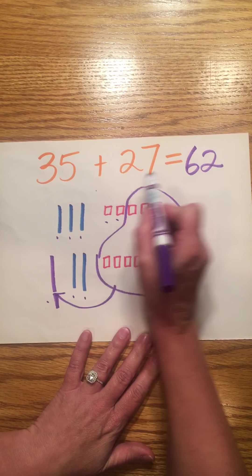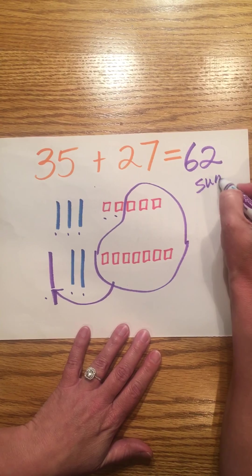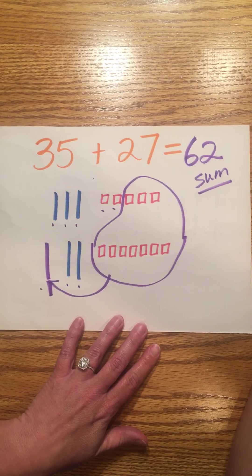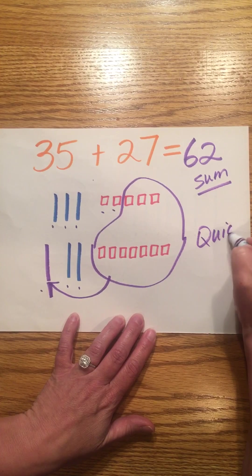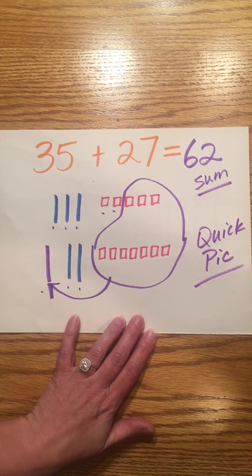35 plus 27 equals 62. This is my sum, the answer to my addition problem. And I solve that using a quick pick.